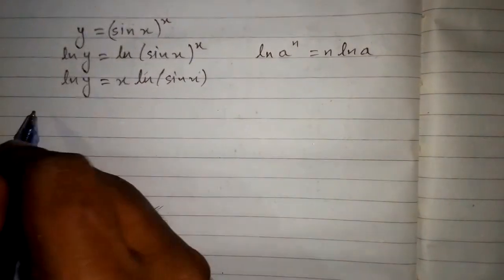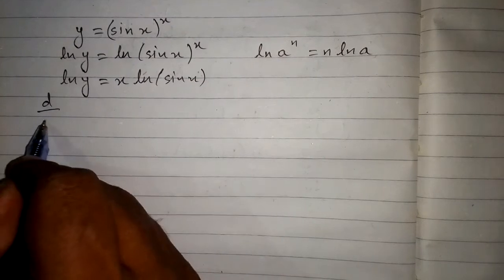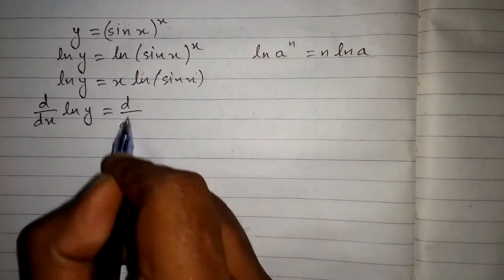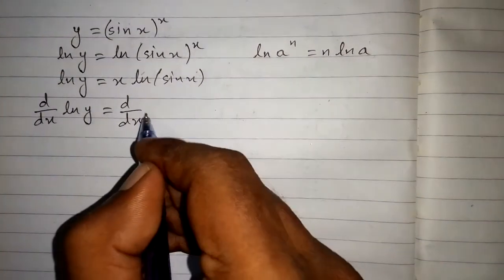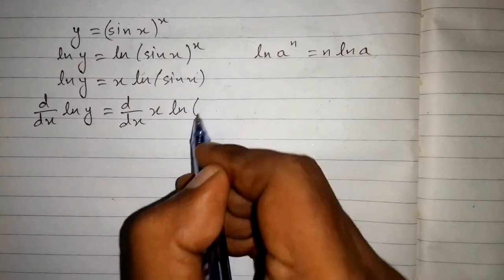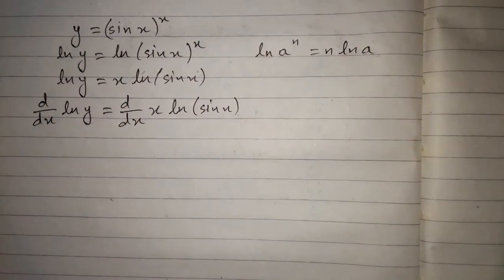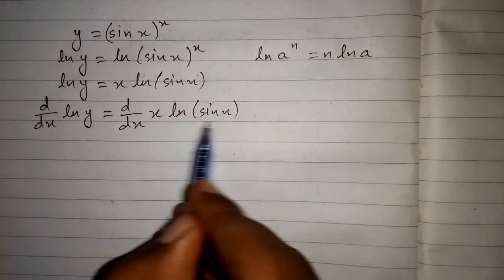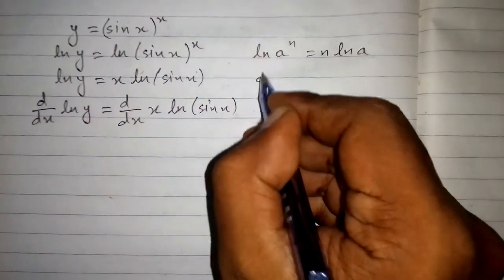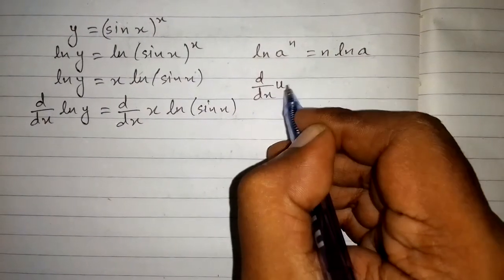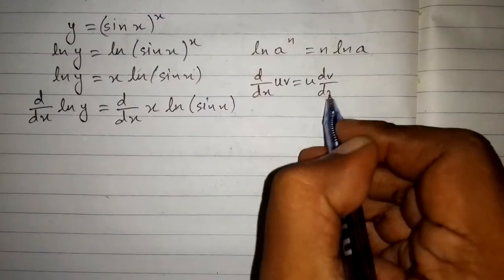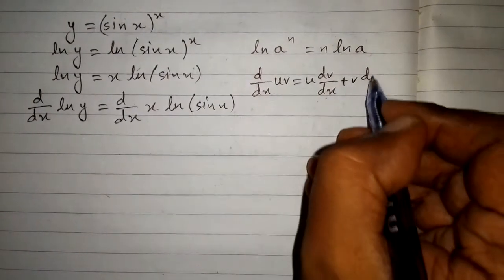Now we will apply the derivative on both sides of the equation, so we have d by dx of ln y is equal to d by dx of x times ln of sine x. On the right side we apply the product rule: d by dx of u·v is equal to u times the derivative of v, plus v times the derivative of u.